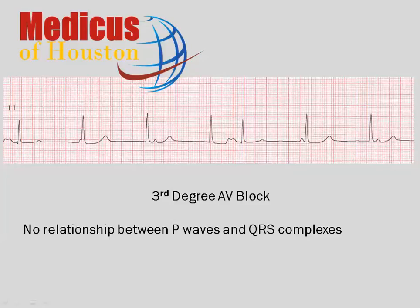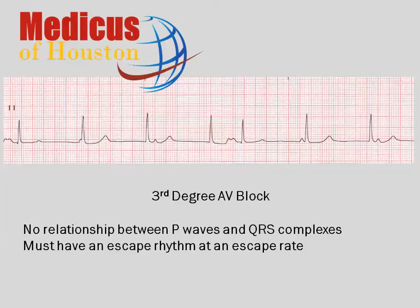The next thing we look for in third-degree AV block is a slow rhythm. All cases of AV dissociation in third-degree AV block have an escape rhythm. There are two possibilities for escape rhythms in AV dissociation: junctional and ventricular. The junctional escape rate ranges from 40 to 60 beats per minute. Ventricular escape rate ranges from 20 to 40 beats per minute. The escape rhythm during a third-degree AV block is precisely — mathematically precisely — regular. There are no early beats, no premature beats. Such beats would indicate AV conduction, and that would automatically rule out any third-degree AV block.